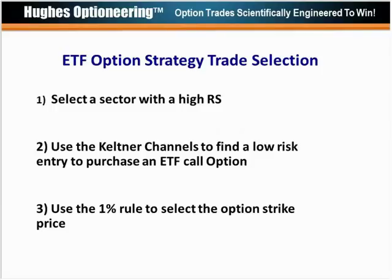Options provide leverage, and for the ETF option purchase strategy we have three rules. We keep the first two rules: select a sector with a high relative strength, then use Keltner channels to find a low risk entry to purchase an ETF call option. The third rule is we use what we call the 1% rule to select the option strike price.